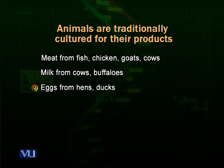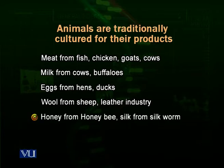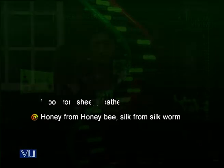We take eggs from hens and ducks. We take milk from cows, buffaloes, goats, and sheep. We get wool from sheep. We use the leather of large organisms like buffaloes or goats for making shoes, jackets, and other things. We get honey from honeybees, silk from silkworms, and we culture fish for protein. We also grow pearl oysters to get pearls.